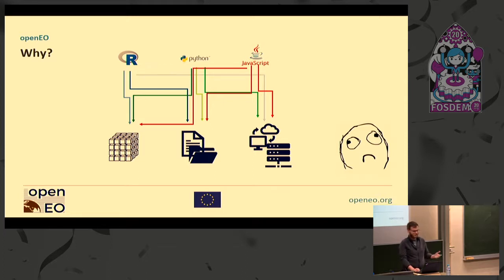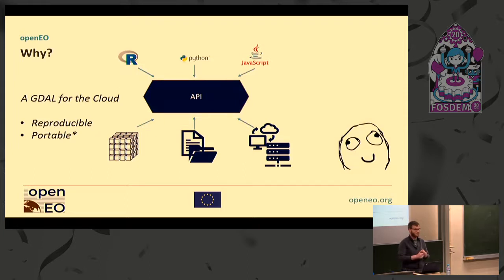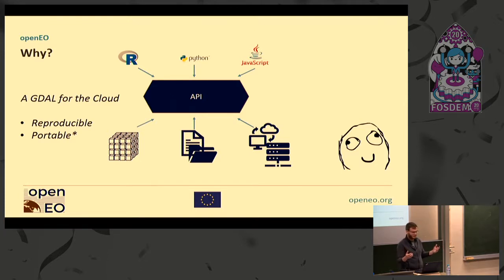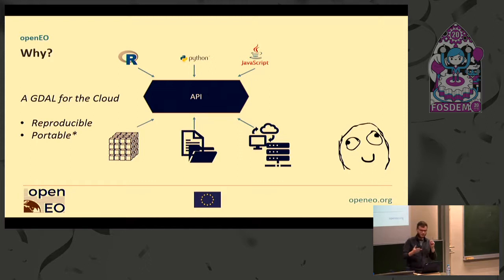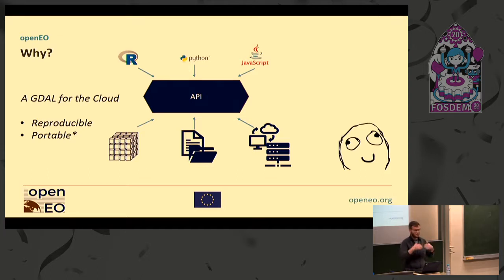What we think is better is to get something like this: you have one client — R, Python, JavaScript — in our case, what we support at the moment. And then you have a streamlined API in between, which then translates the things to a single API, where you have a single way of how you process — whether for us it's a DataCube, how you build things, how you download things, and so on. It's basically like most of you probably know GDAL — that's the thing that translates things between the GIS programs and data formats. That's basically some kind of GDAL for the cloud.